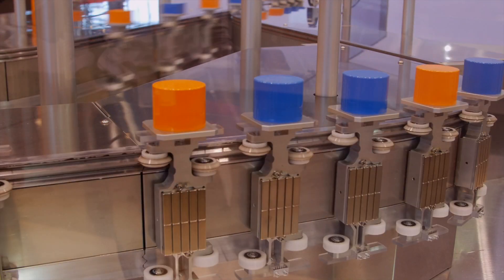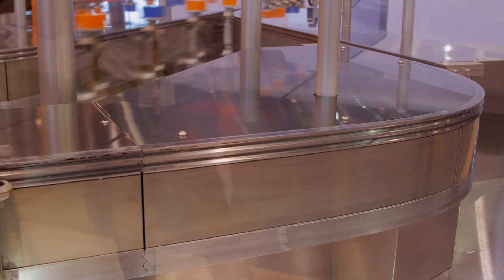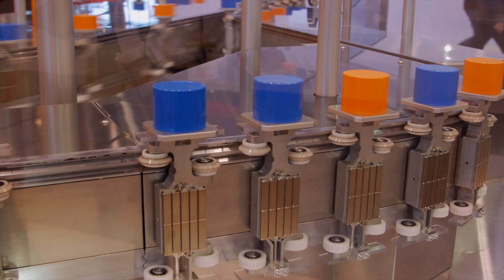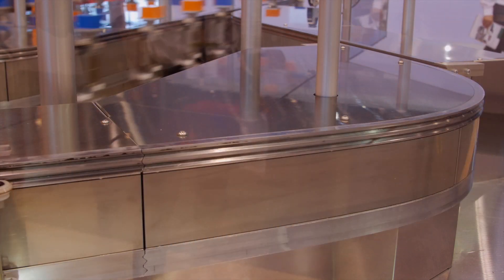Each ACOPOStrak shuttle you see flying by here holds an individual product, independently controlled through the entire manufacturing and packaging process, ready to ship to the consumer who ordered it. This is the adaptive machine.